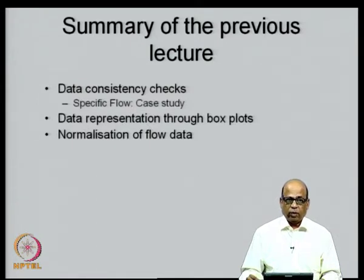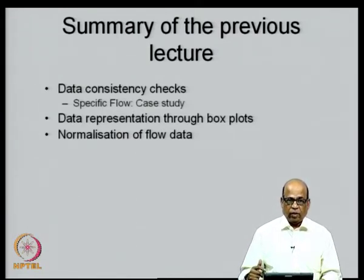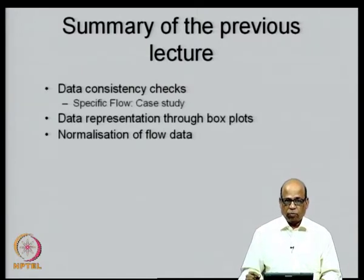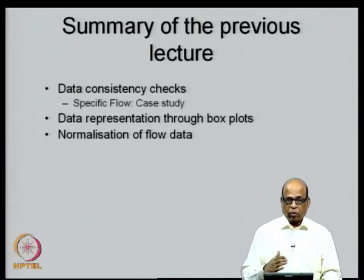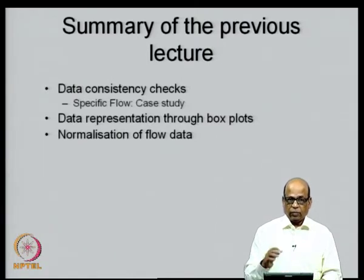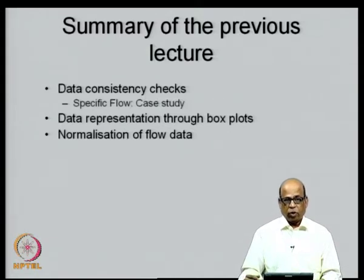In the last lecture, I also discussed data representation through box plots. Box plots provide a good representation of uncertainties, including the range between minimum and maximum flow, the median, the 25th percentile, 75th percentile, and sometimes the mean. These box plots are useful especially when comparing different time series or examining the variability of a particular time series across different time windows — for example, comparing variability across successive 20-year periods within a 100-year flow record.